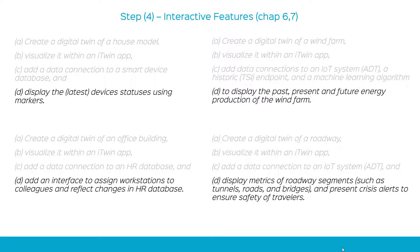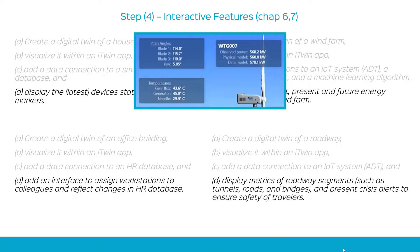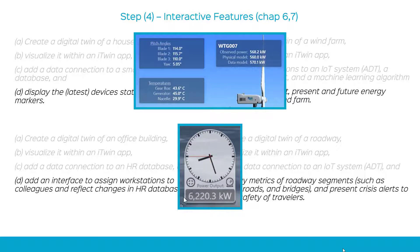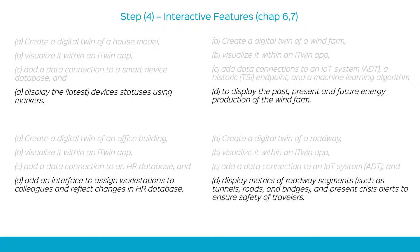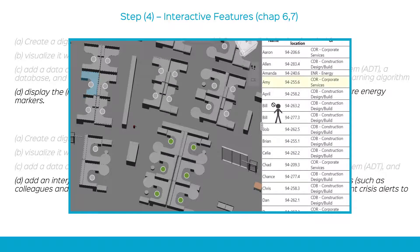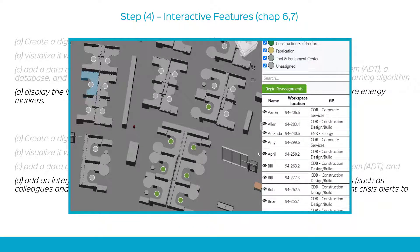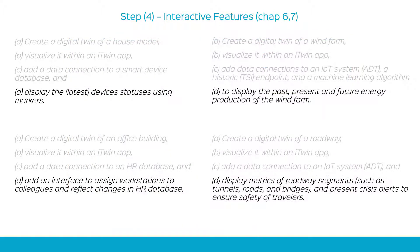Finally, once we've tapped into this additional data stream, we can combine its information to start displaying all the cool stuff. For example, the markers in the case of our smart house. In the case of the wind farm, we added some decorators and a clock widget that shows the overall power of the wind farm. In the case of the office, we added an entire interface to drag and drop people and put them on workstations, and write right back into the HR database to update that information. There are tons of possibilities — we barely scratched the surface in chapters 6 and 7.